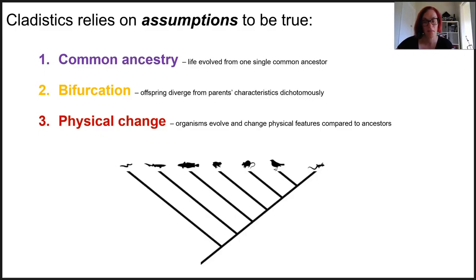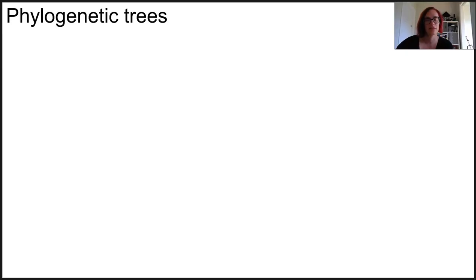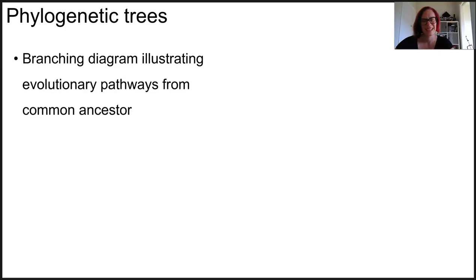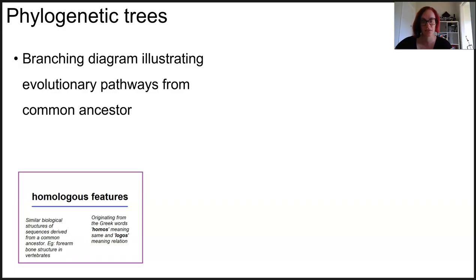We need to keep these three assumptions in mind as we interpret the data in cladograms and phylogenetic trees. Phylogenetic trees are similar to family trees — they are branching pathways that show the descendants of common ancestors, and we use them to compare species, genera, phylum, or basically any taxa in the Linnaean classification system. They're constructed using homologous features, both morphological and molecular.